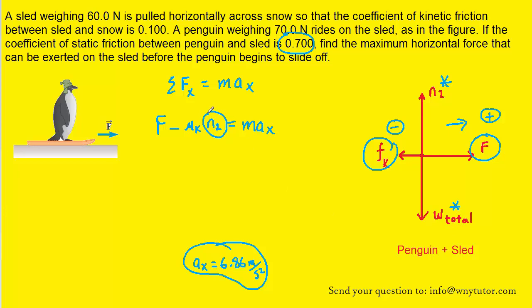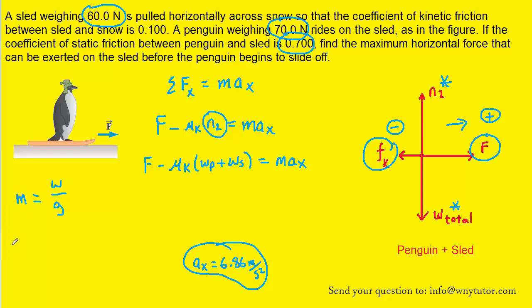The normal force N2 equals the total weight of the penguin and sled, since there is no y-direction acceleration and those forces are balanced. The penguin weighs 70 newtons and the sled weighs 60 newtons, so together they weigh 130 newtons. To find the combined mass, we divide the total weight by the gravitational constant: mass equals 130 newtons divided by g.